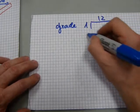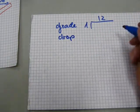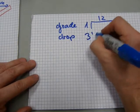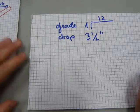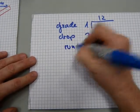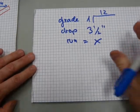And we have a drop given of 3 and a half inches, and we need to make out of it a run. It needs to be determined. That's the unknown x.